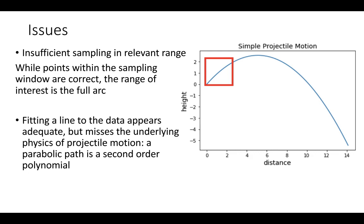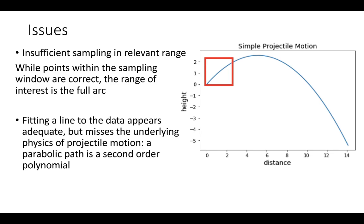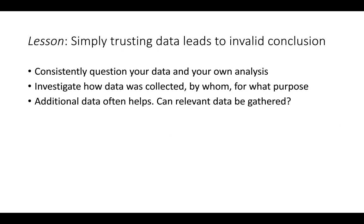The takeaway message: have some reason for why you expect the behavior of the data. If you're just blindly mapping — 'the data looks linear, therefore we'll use a linear fit' — and maybe it does have a great fit for that set of data, but if you don't understand the underlying physics of what's going on, you're probably going to get something wrong. Don't trust your data blindly; ask questions about it. 'Does it make sense to do that?' is the underlying question.